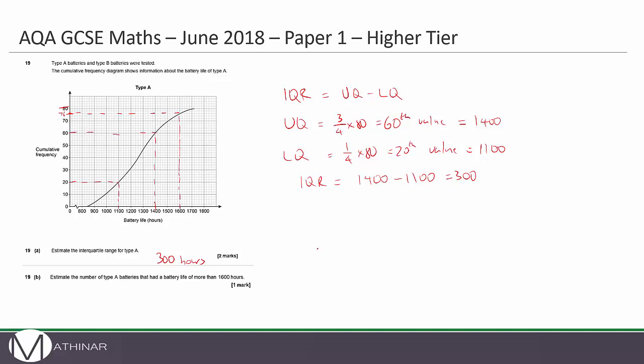So what this is telling me is that 76 batteries lasted less than 1,600 hours. So 80 take away 76, which is 4 batteries lasted more than 1,600 hours. The answer here is 4.